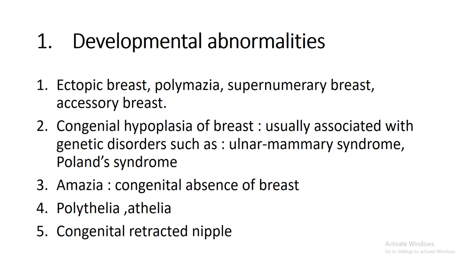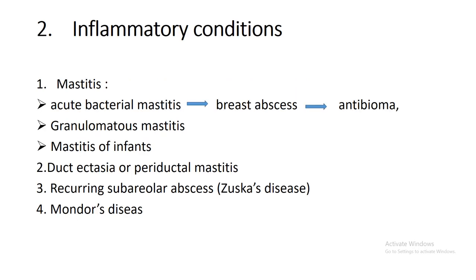The first group is developmental abnormalities, including ectopic breast, congenital hypoplasia, amasia, polythelia, athelia, and congenital retracted nipple. In the second group — inflammatory conditions — we have mastitis of various types: acute bacterial mastitis, granulomatous mastitis, and mastitis of infants. The commonest is acute bacterial mastitis; if not treated with antibiotics it gives rise to abscess formation, and if the abscess is not adequately drained it can give rise to antibioma or even rupture.